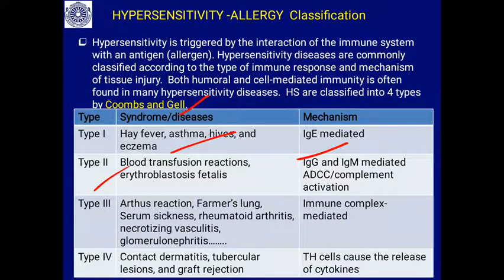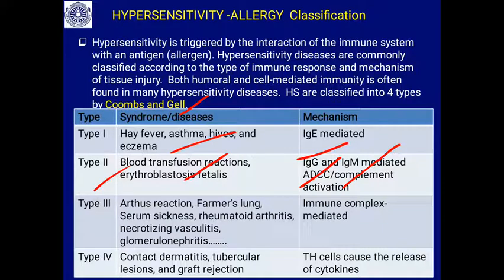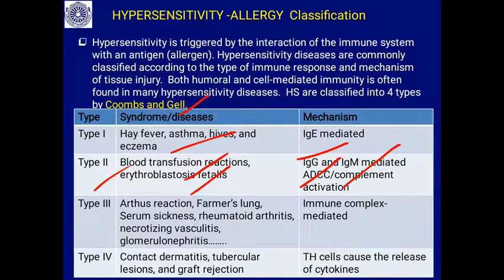Type 2 hypersensitivity is mediated by IgG and IgM — it is antibody-dependent cytotoxicity or complement activation. Examples include blood transfusion reactions, where a person receiving blood of an incompatible type experiences an immediate antigen-antibody reaction. Another example is erythroblastosis fetalis — when an Rh-positive person fathers a child with an Rh-negative woman, the baby is Rh-positive, and the antigen-antibody reaction in the fetal blood can lead to fetal death or abortion.